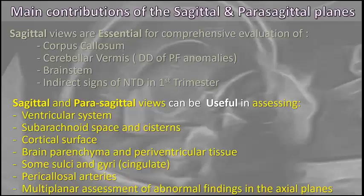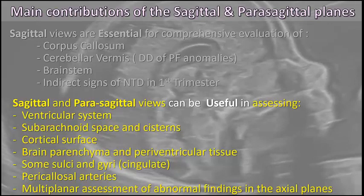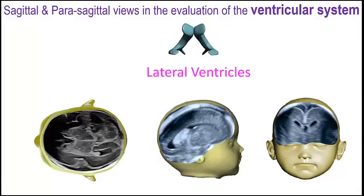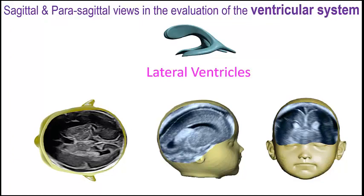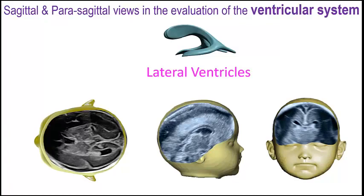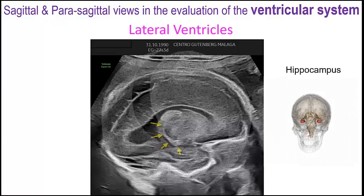There are other scenarios in which the sagittal and parasagittal planes can assist us, such as for the evaluation of the ventricular system. In the routine exam, we usually evaluate the lateral ventricles in the axial plane, but for a complete assessment we need a multiplanar evaluation. The parasagittal planes allow a complete visualization of the lateral ventricles, showing all three horns at the same time, and this parasagittal plane is also the best for the visualization of the hippocampus.